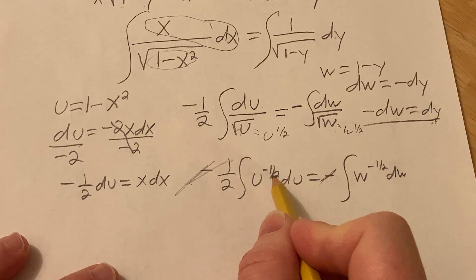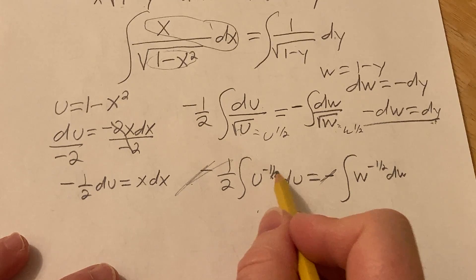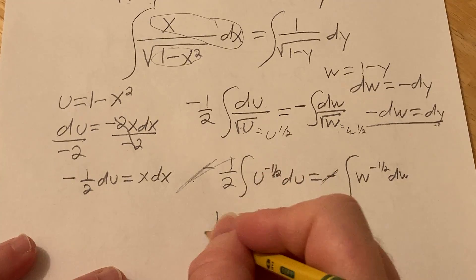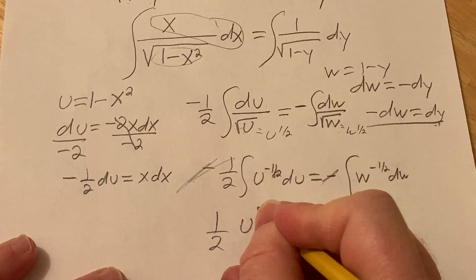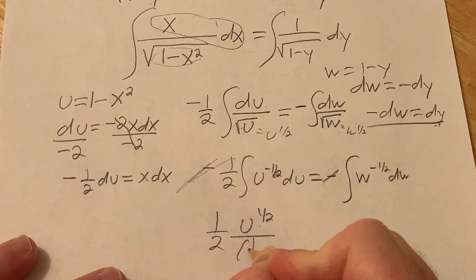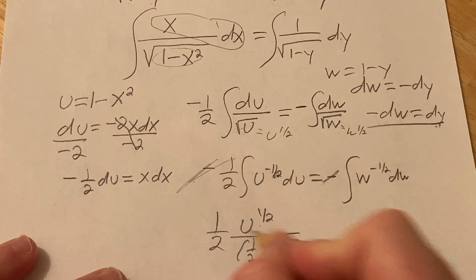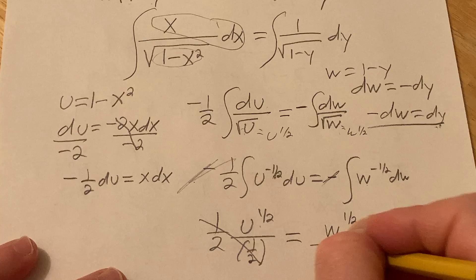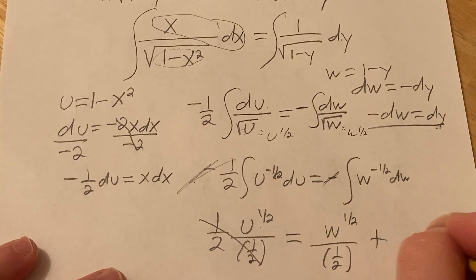And then here when we integrate, we add 1 and divide by the result. When you add 1 to negative 1 half, you get 1 half, and then you divide by 1 half. So you have 1 half u to the 1 half over 1 half plus c.